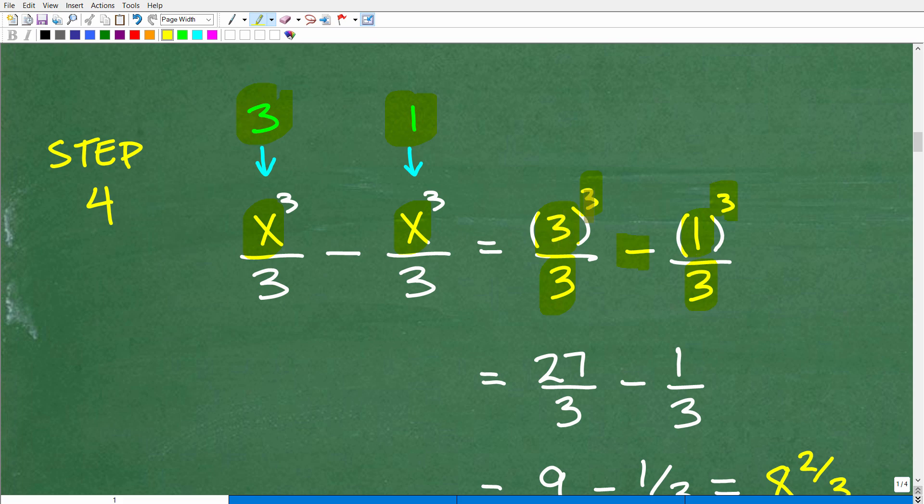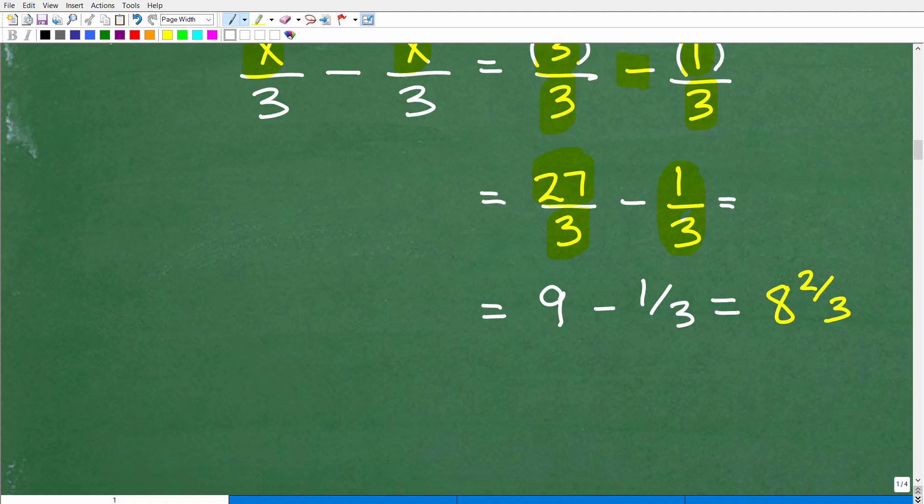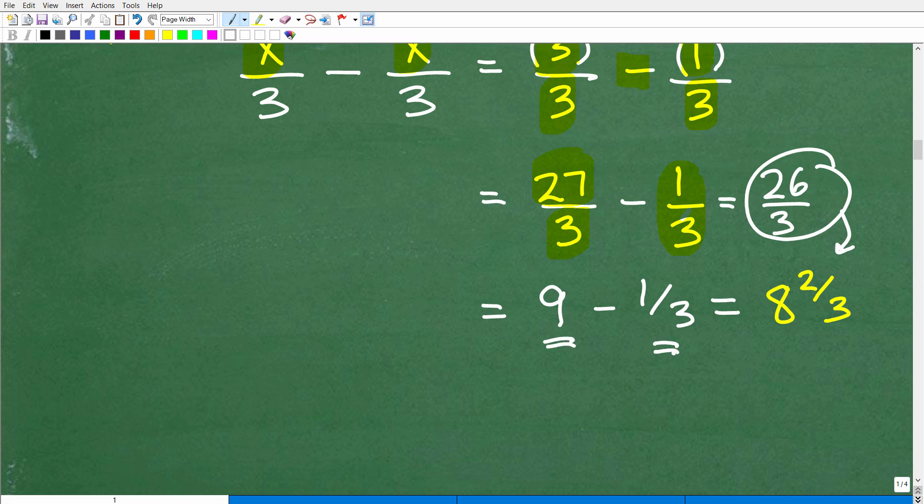So 3 cubed is 3 times 3 times 3. So 3 times 3 is 9. 9 times 3 is 27. So this will be 27 over 3. 1 cubed is 1 times 1 times 1. Of course, this will all just be 1 third. So when we do this problem right here, a couple of ways you can look at it, you can see the denominators are the same. So we're going to get 26 over 3. And then when we convert that into a mixed number, we'll get 8 and 2 thirds. Of course, we can see it this way, 27 divided by 3 is 9. 9 minus 1 third is 8 and 2 thirds.